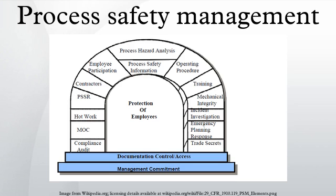Information pertaining to the technology of the process should include at least a block flow diagram or simplified process flow diagram, process chemistry and its properties, maximum intended inventory, safety upper and lower limits for temperatures, pressures, flows or compositions, and an evaluation of the consequences of deviations, including those affecting the safety and health of employees.